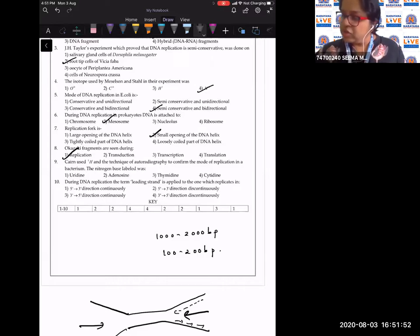Cairns used H3 and the technique of autoradiography to confirm the mode of replication in a bacterium. The nitrogen base labeled was thymidine. It was tritiated thymidine. So if they had used the radioisotope of hydrogen, that is tritium, so it was tritiated thymidine.